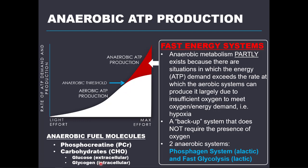Recap questions: What is the fuel source for the alactic or phosphagen system? The answer is phosphocreatine, also called creatine phosphate or PCR. Which fuel sources are utilized to form ATP via the lactic system or fast glycolysis? The answer is carbohydrates, which include glycogen and glucose. Now let's discuss each of these two anaerobic pathways, which do not require oxygen, produce ATP very fast, and exist to back up the aerobic system during post-anaerobic threshold exercise.